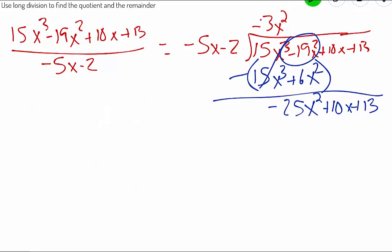Now we're going to divide all over again negative 5x into negative 25x squared. Or again, negative 5x times what is going to give us a negative 25x squared?